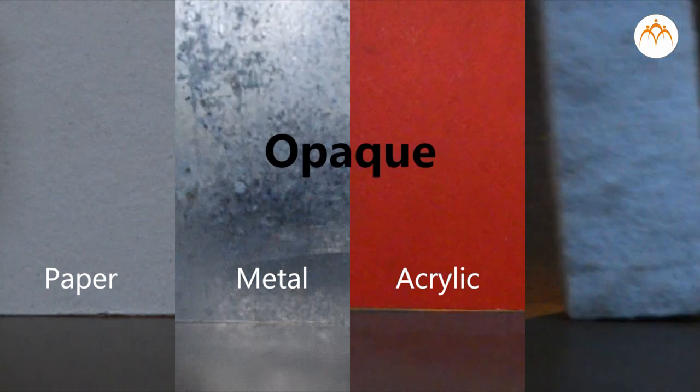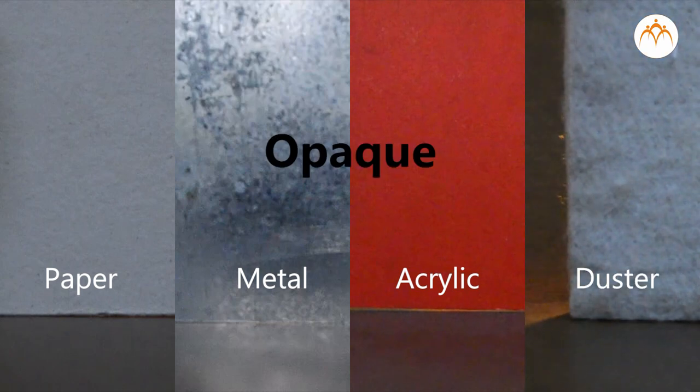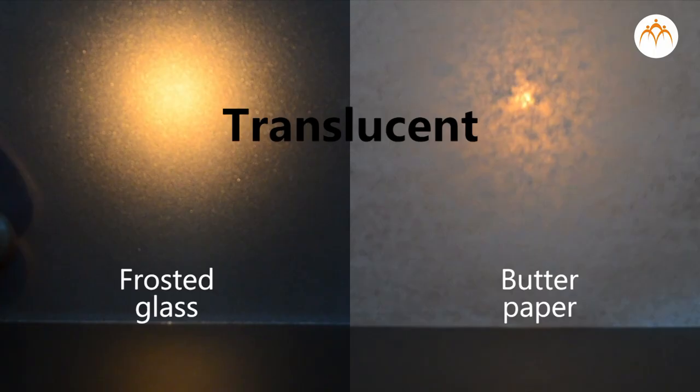Objects through which light cannot pass are called opaque objects. A translucent object lets light pass through. But objects on the other side cannot be seen clearly.